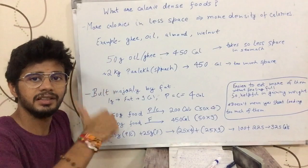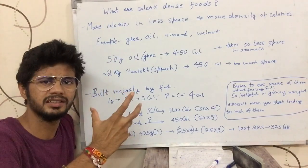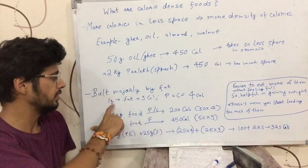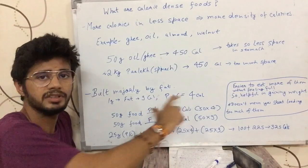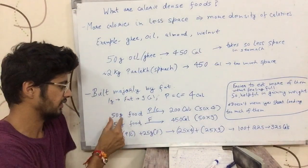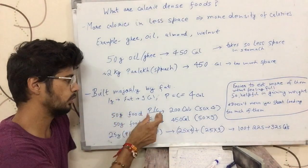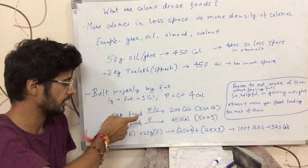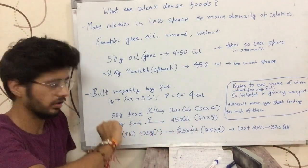How do we know which foods are calorie dense? Some macronutrients have higher calories. Fat has more — 9 calories per gram. Protein and carbohydrates have 4 calories per gram. So 50 grams of food made of protein or carbohydrates gives about 200 calories, while 50 grams made of fat gives about 450 calories.